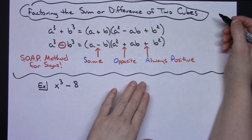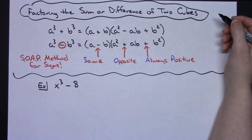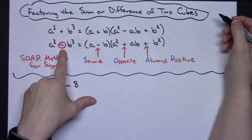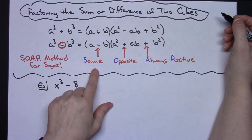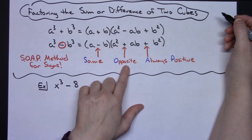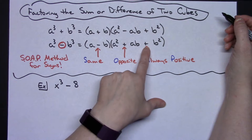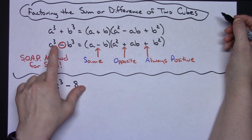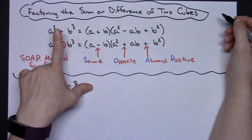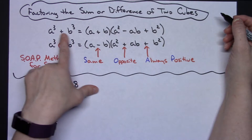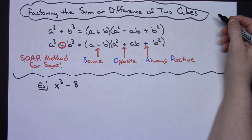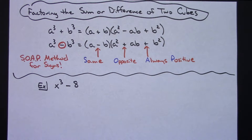How you can remember how the signs go is by using a mnemonic called SOAP — the SOAP method for your signs. In the original problem, if it is a minus then the first sign is the Same — that's the S in SOAP. The next sign is Opposite — O for SOAP. The last one is Always Positive. So it doesn't matter whether you're doing the difference or sum of two cubes, you can follow this acronym. Here's my original sign which is a plus: I need the first one to be the same, the next one to be opposite, and the last one always positive.